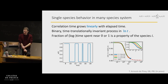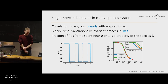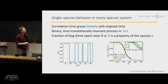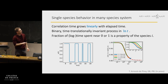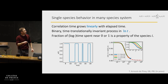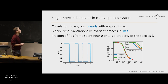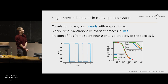This goes hand in hand with a correlation time that grows linearly with the elapsed time. These are the aging curves — the correlation function decreases more and more slowly depending on the initial time. Here is the collapse with respect to the correlation time difference divided by the initial time. The dashed line is the analytical curve and the analytics fit perfectly.